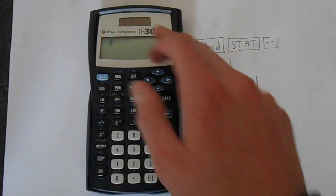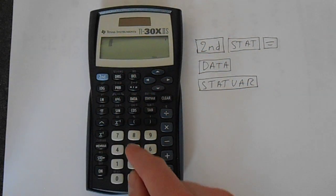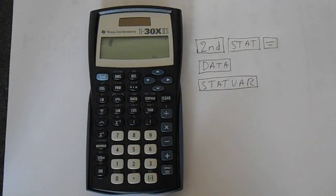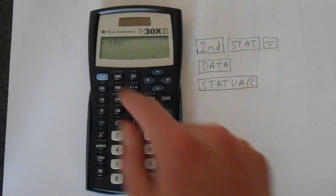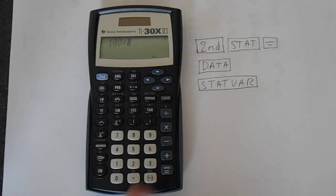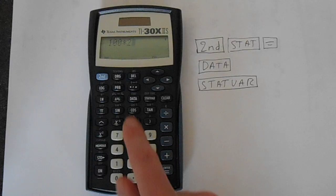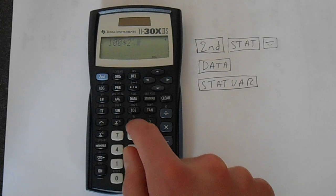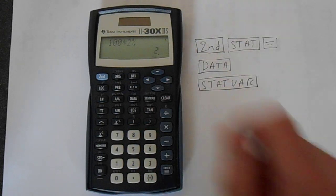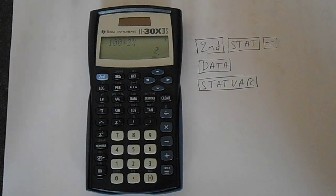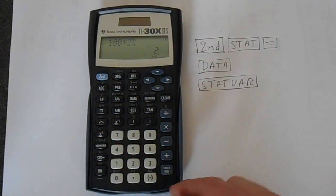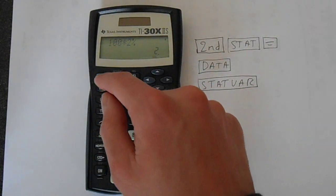You can do percentages on this calculator. So say you want to find 2% of 100, which unsurprisingly is 2. So 100 times 2, and if you do second function and on this open bracket there's the percent, equals, that gives us 2% of 100. So the percentage key is quite useful if you're lazy and can't be bothered to convert it to a decimal.